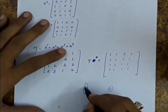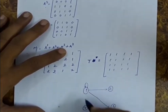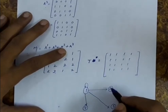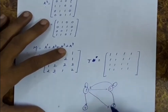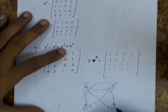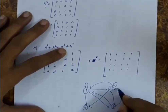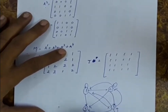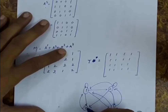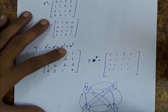So the transitive closure has edges: 1 to 1, 1 to 2, 1 to 3, and 1 to 4. Similarly, 2 to 1, 2 to 2, 2 to 3, and 2 to 4. Then 3 to 1, 3 to 2, 3 to 3, and 3 to 4. Finally, 4 to 1, 4 to 2, 4 to 3, and 4 to 4. This is the transitive closure.